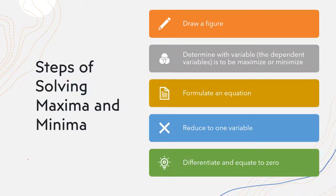Last time, we already discussed the steps of solving maxima and minima. Here are the steps again: first, draw a figure and determine the variable — the dependent variable to be maximized or minimized. Next, formulate an equation reduced to one variable. After it is reduced to one variable, differentiate and equate to zero.